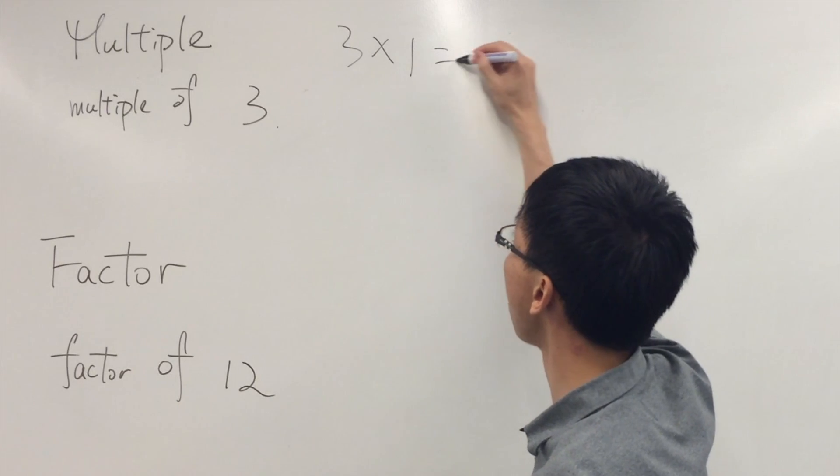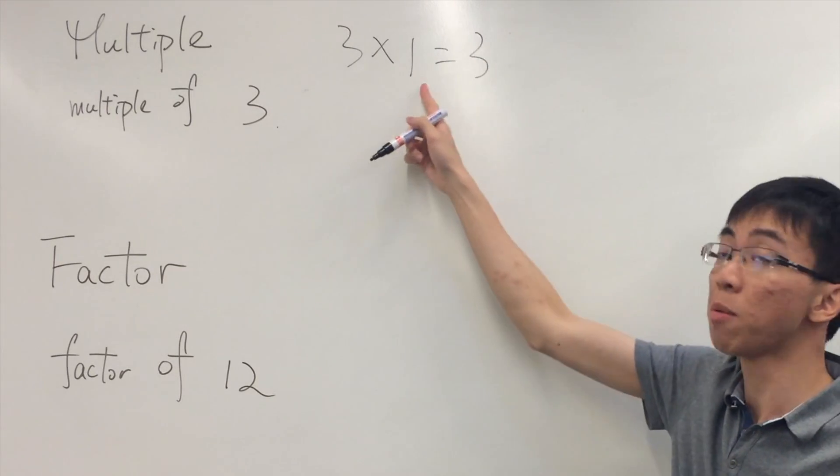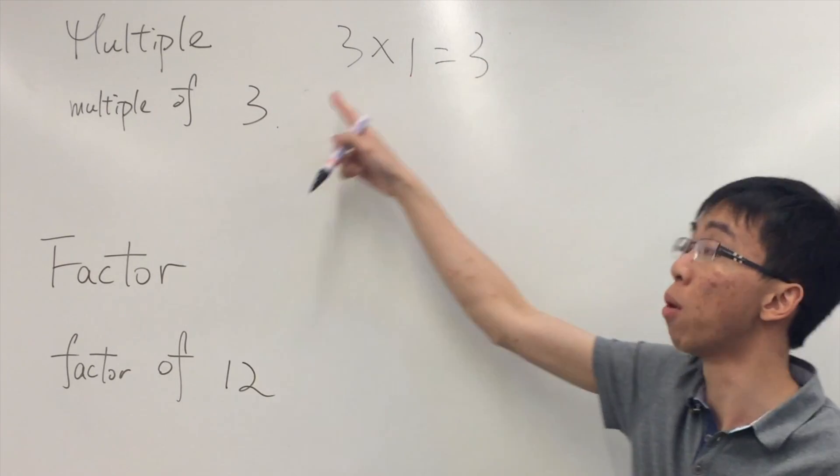For example, three times one, we get three, and we will call it three times one equals three. The three is a multiple of three.